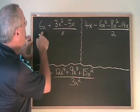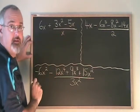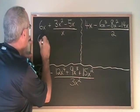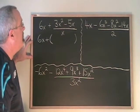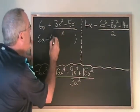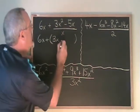In this question, we have 6x plus 3x squared minus 5x over x. I write 6x plus, and I put a bracket, and then I put the answer to the division inside the bracket. 3x squared divided by x is 3x. Minus 5x divided by x is minus 5.